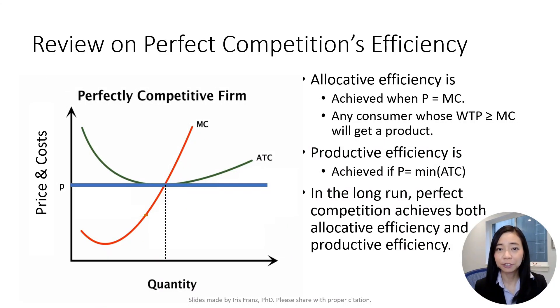Let's first review the efficient outcome of perfect competition in the long run. We know that for perfect competition in the long run, there is this triple equality where the price is equal to marginal cost, which is also equal to the lowest point of ATC.